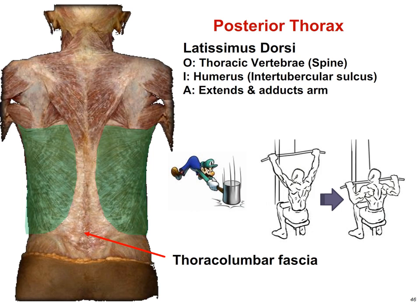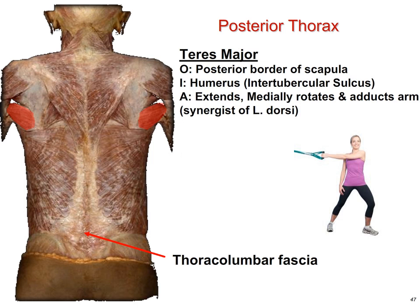The thoracolumbar fascia is the white, fibrous connective tissue connecting from the thoracic and lumbar spines to the latissimus dorsi muscle — it's an origin for many muscles and feels remarkably tough and plastic-like. A synergist of the latissimus dorsi is the teres major. Teres means circular, and major indicates it's the larger of the two. Its origin is the posterior border of the scapula, and its insertion is the proximal humerus at the intertubercular sulcus. The action of the teres major is the same as the latissimus dorsi: adduction and medial rotation of the arms.